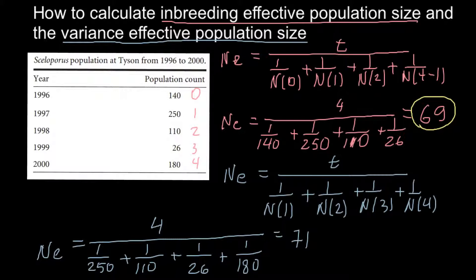So as you see, these numbers are close to each other. Here we have 69 and here we have 71. But still in other examples where fluctuations in size can be much greater from generation to generation, these numbers can be very different.